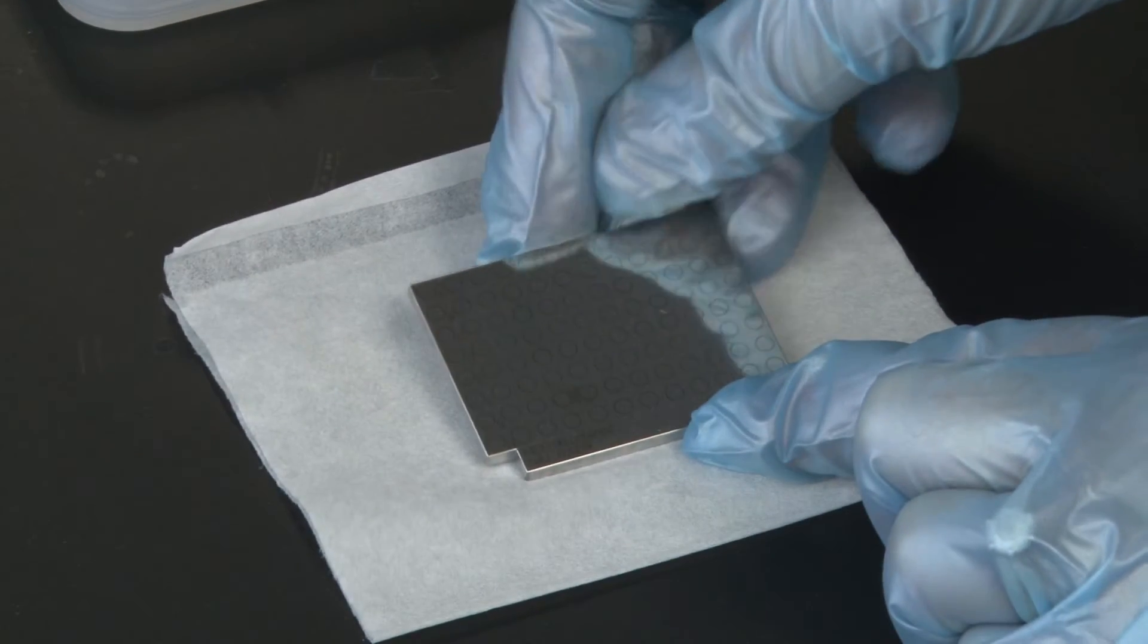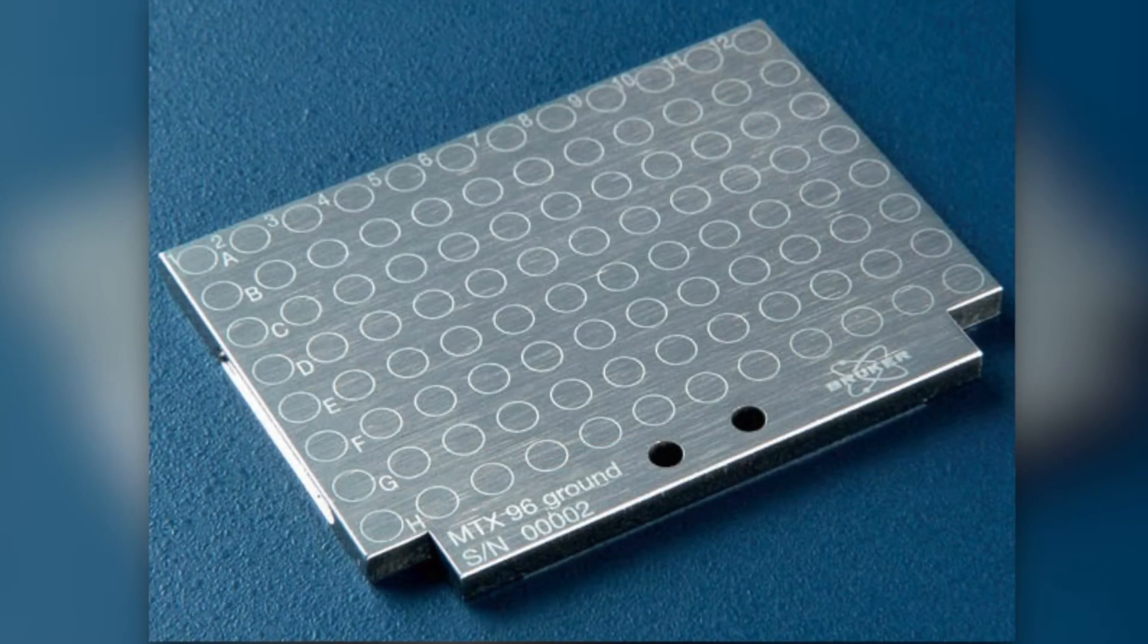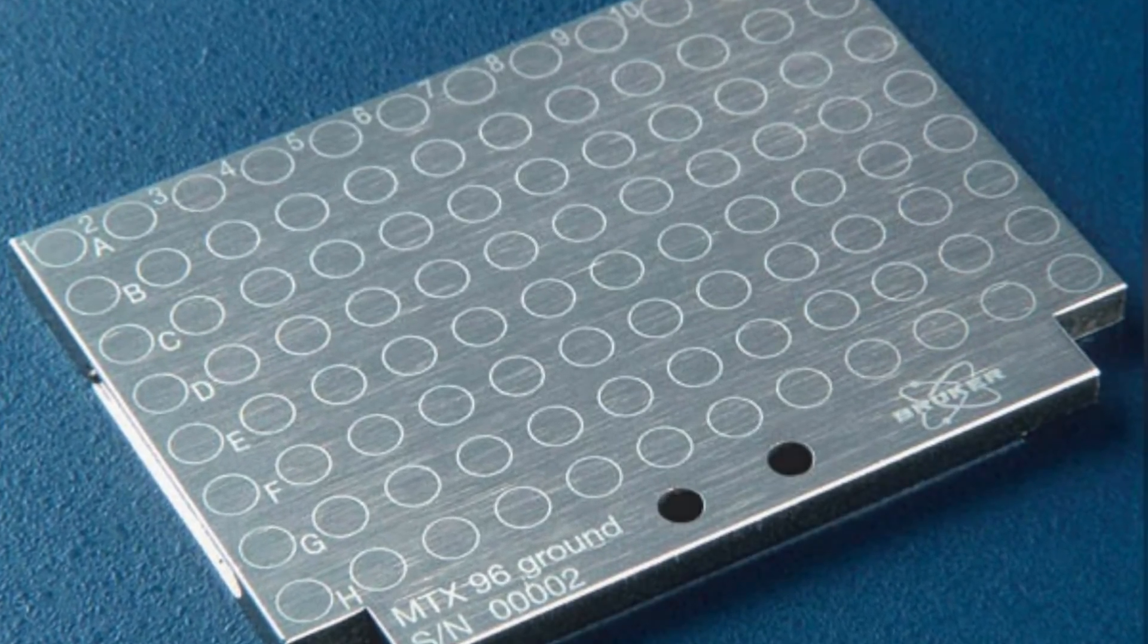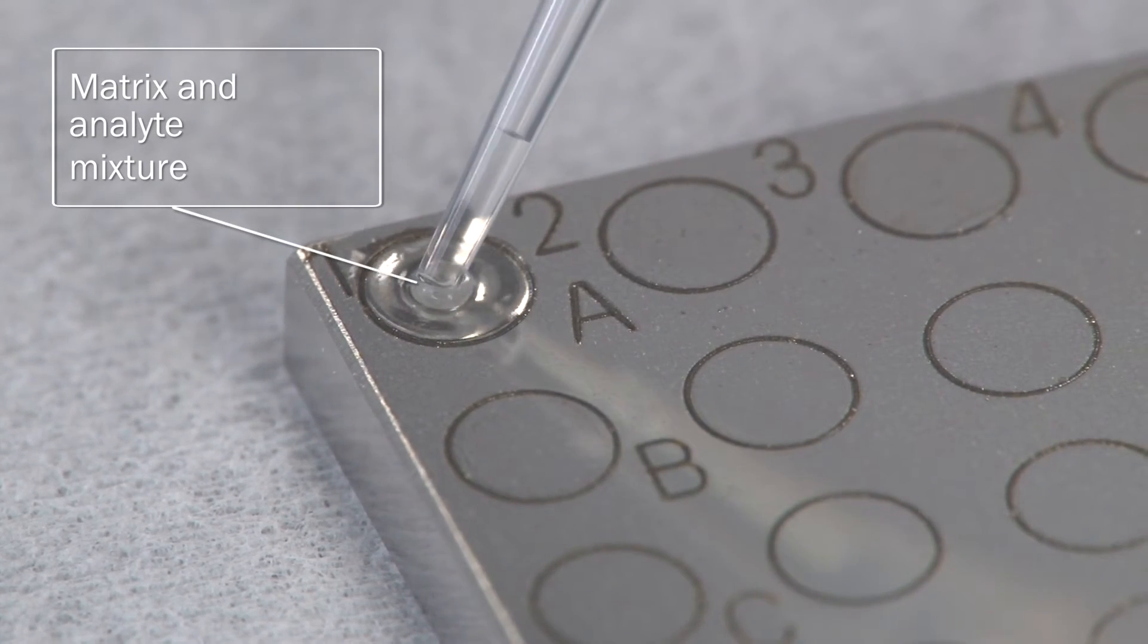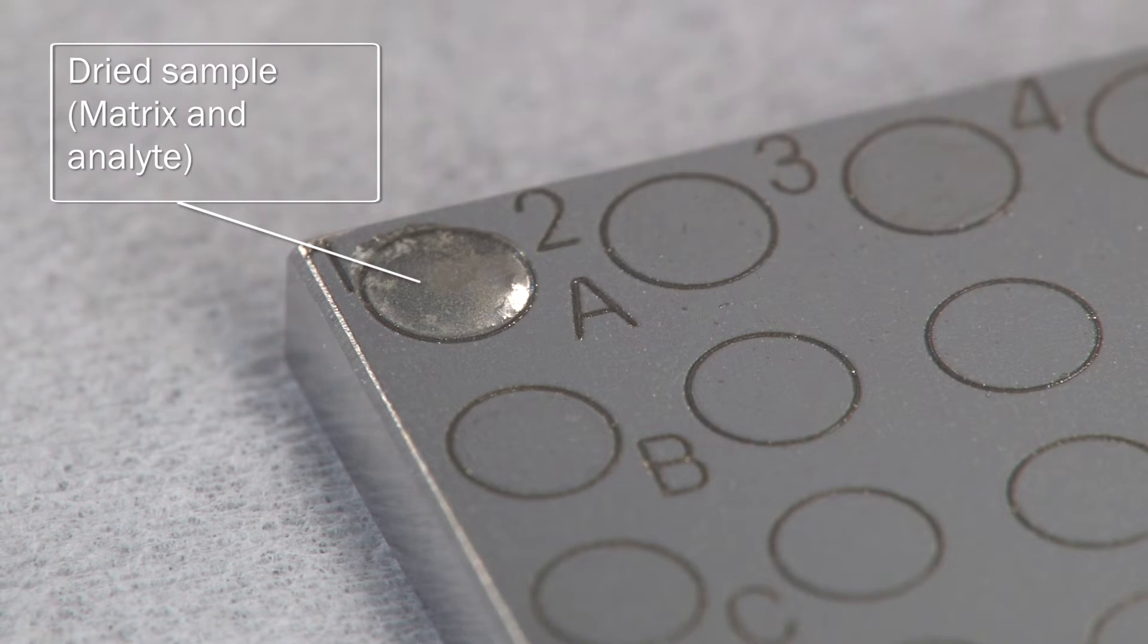Solutions of the matrix and analyte are deposited onto a sample plate known as the target. The target can be made of polished or ground stainless steel and has spots for several different samples to be applied. The solvent is allowed to evaporate from the sample solution, leaving behind a solid sample spot on the target that will be analyzed by the MALDI-TOF spectrometer.